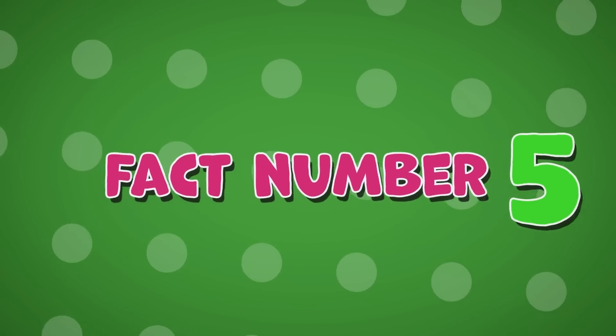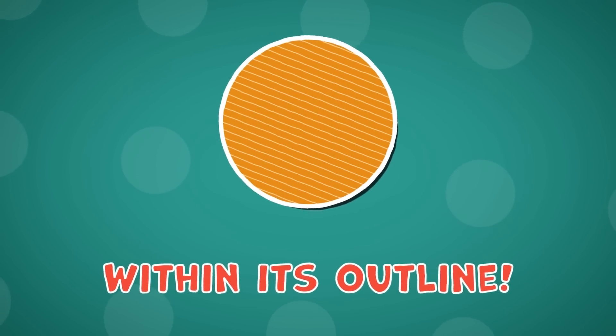Fact number five: The area of a circle is the amount of space within its outline. This can be calculated using the formula: pi times square of the radius.